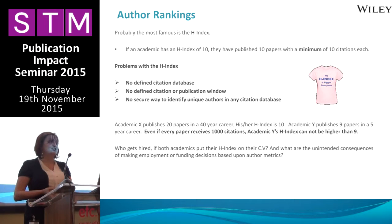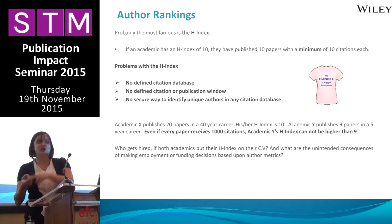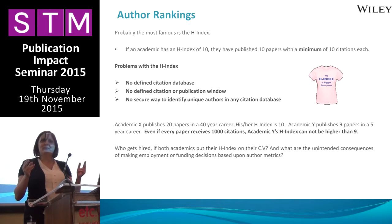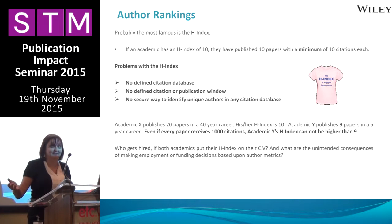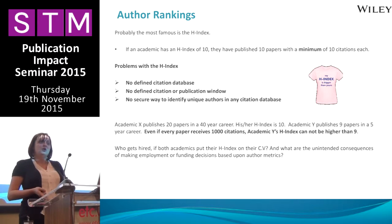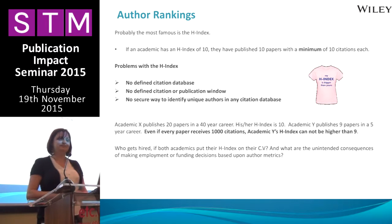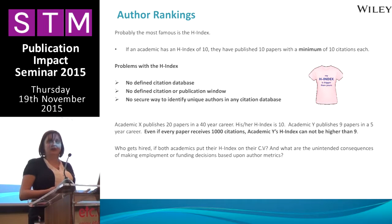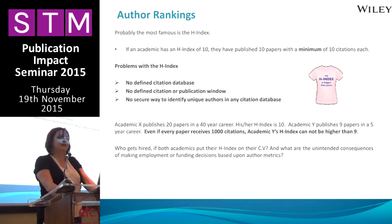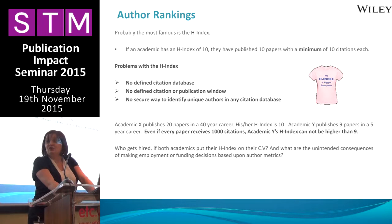There is no defined citation database for the H-index, which means you can calculate it in Google Scholar, in Scopus, or in the Web of Science. The trouble is these databases only count a citation if they index both the cited and the citing article. Web of Science is very selective in the journals it indexes, with a much smaller number than Scopus, while Google Scholar indexes pretty much anything it finds. No one can actually map the entire size of Google Scholar, which means calculating your H-index there gives a very different result to calculating it in the Web of Science. There's also no defined citation or publication window, meaning older academics get a quite significant advantage. And there's no secure way to identify unique authors, at least not until things like ORCID author identification become commonly used.